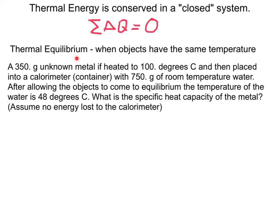So thermal equilibrium is when objects have the same temperature. So if I have, like in this problem down here, some metal at 100 degrees Celsius, and I put it in water room temperature, we generally take to be 20 or 21 degrees Celsius, and then it sits in there for a little while. The water warms up, the metal cools down, and we reach an equilibrium temperature in this problem of 48 degrees Celsius.